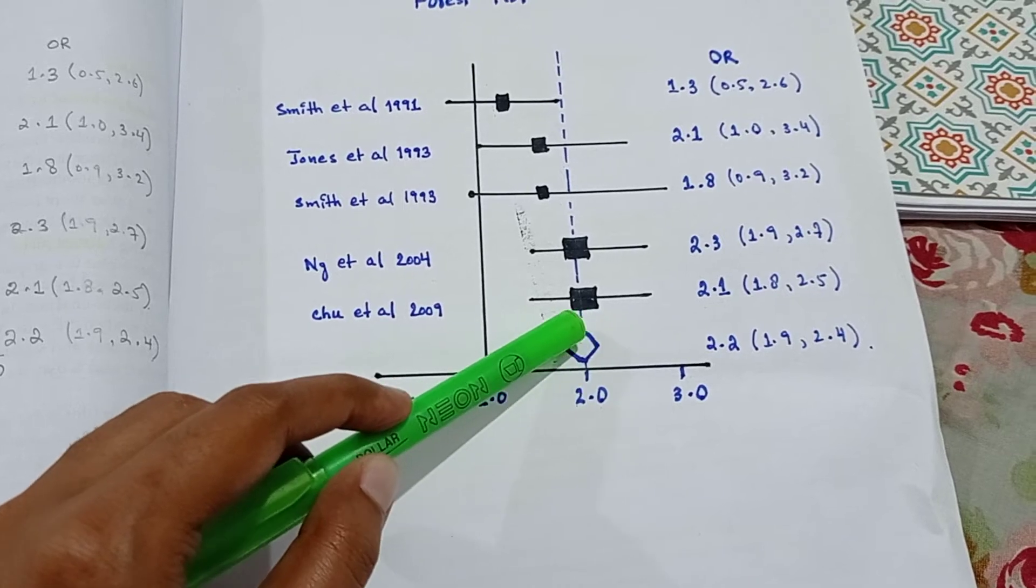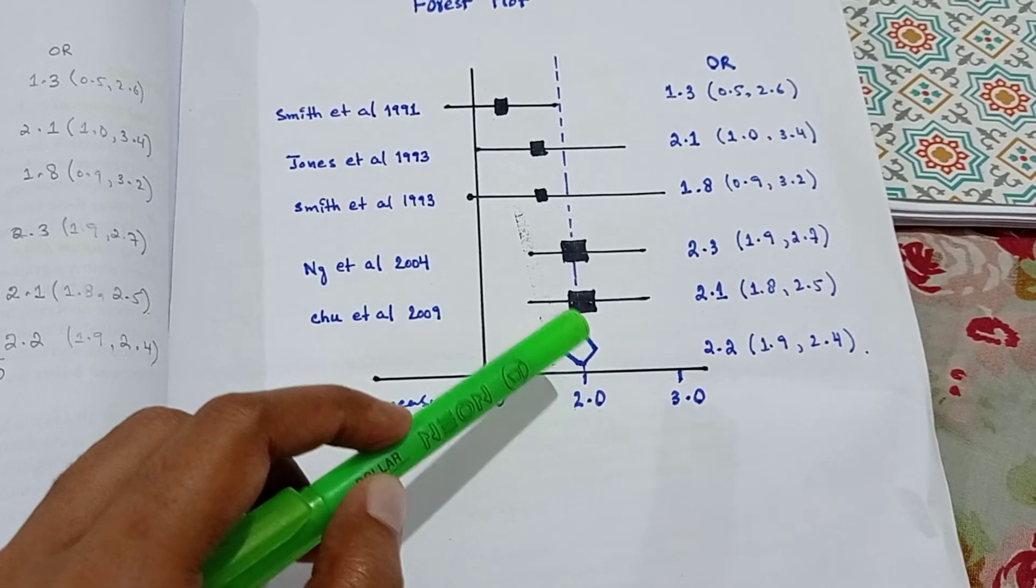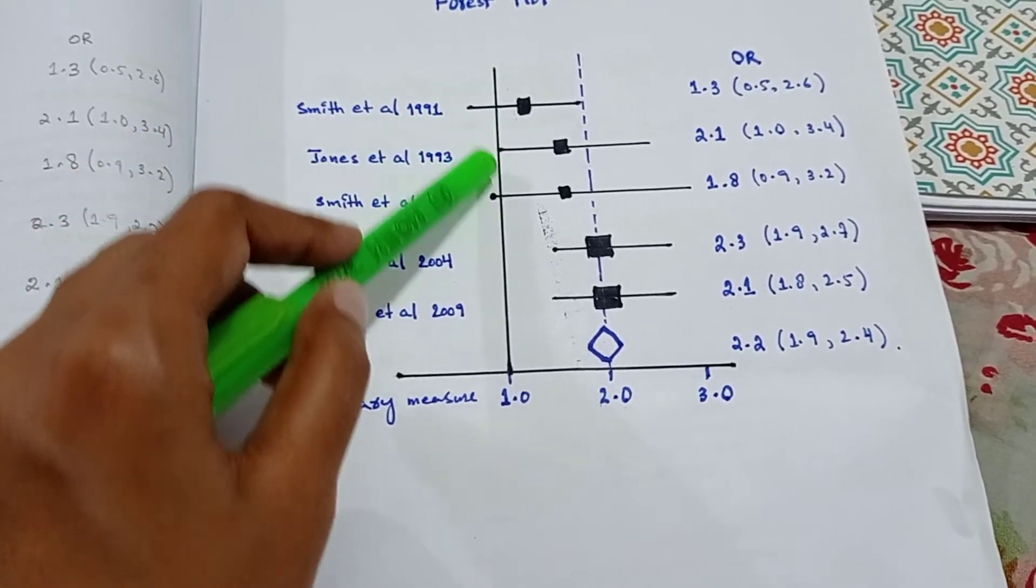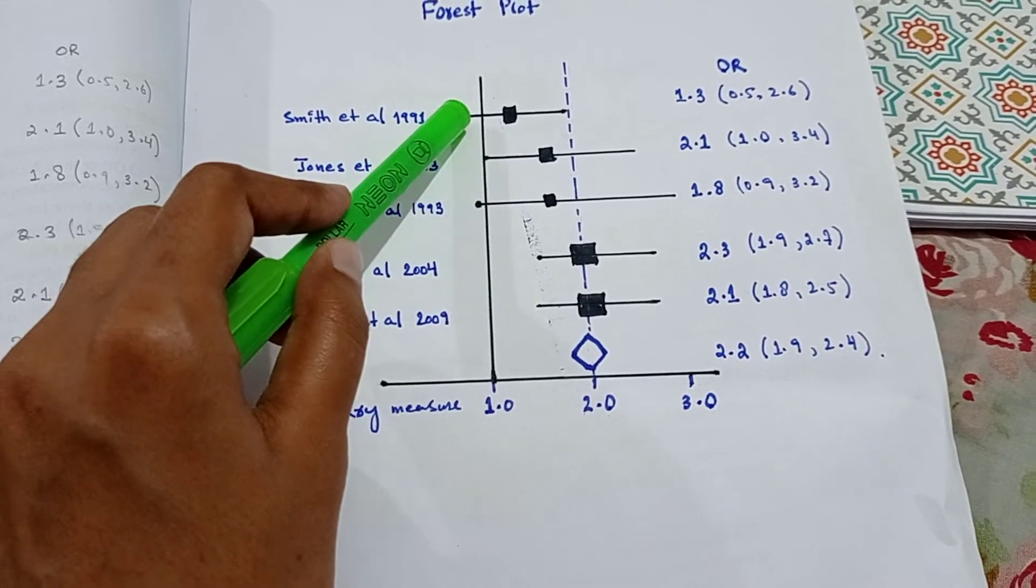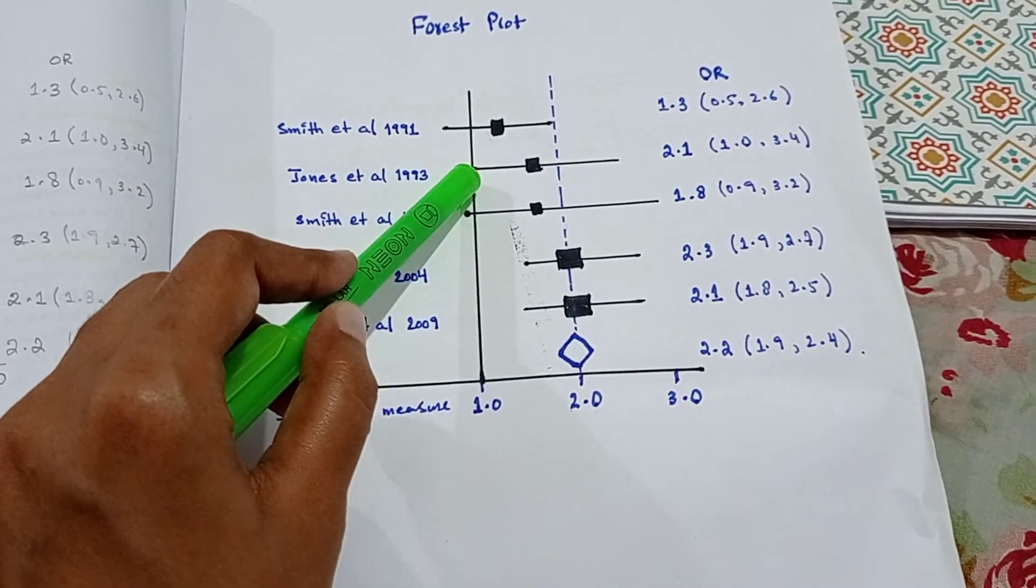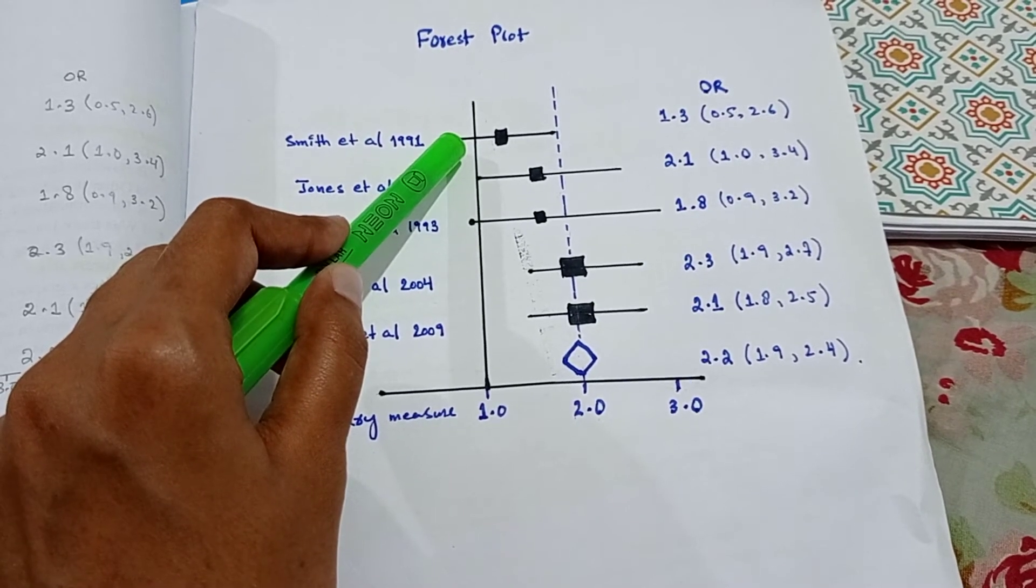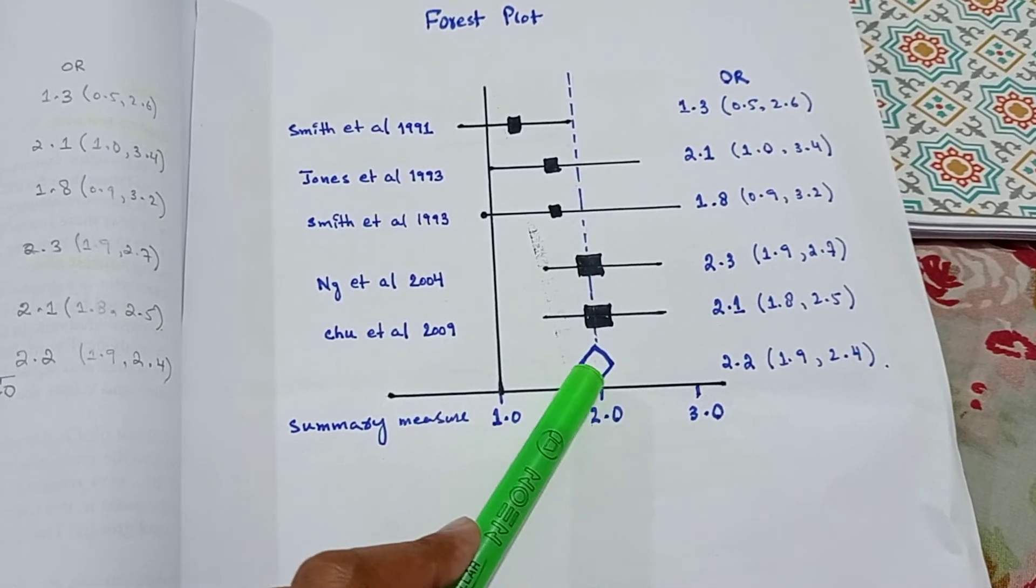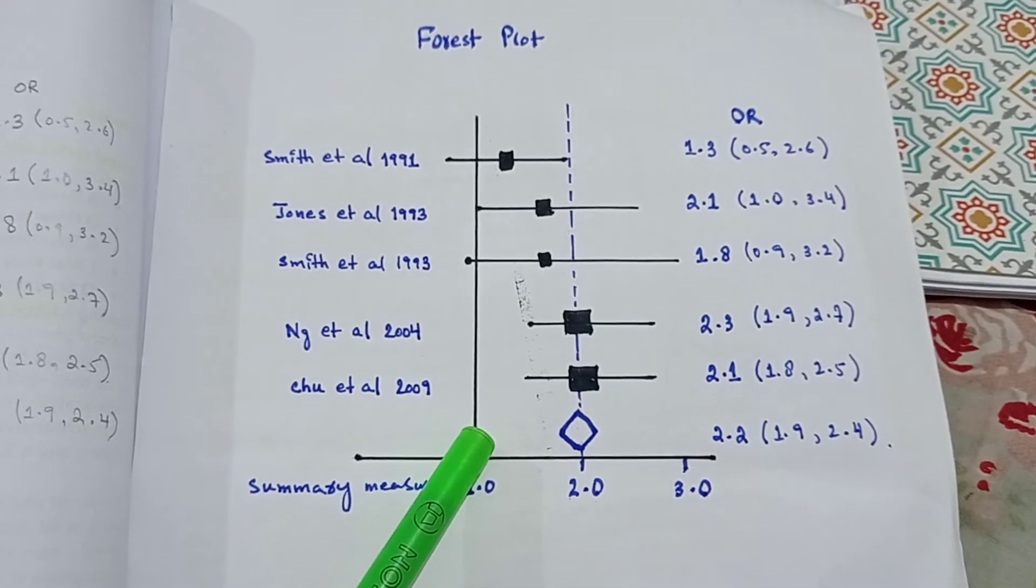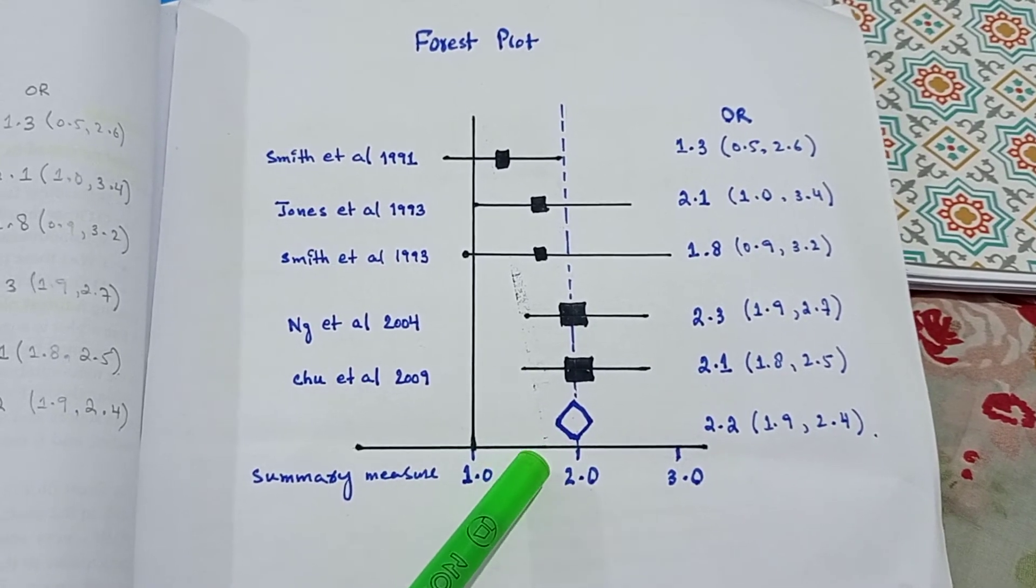This diamond is representing the overall effect of this meta-analysis. And if any of these confidence interval lines are overlapping with the line of no effect, it means that this study is showing that there is no difference between the effect of test group and the control group. Results are statistically insignificant. And if the lateral points of this diamond is touching the line of no effect, it means that the overall result of this meta-analysis is inconclusive.